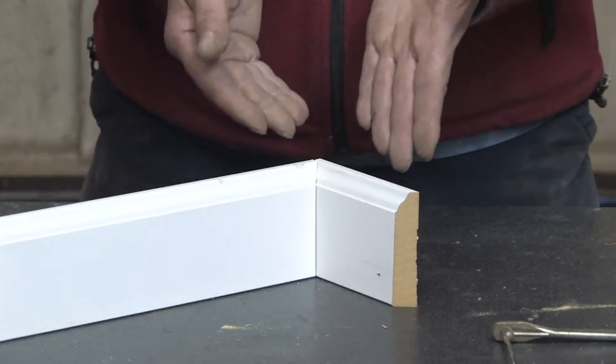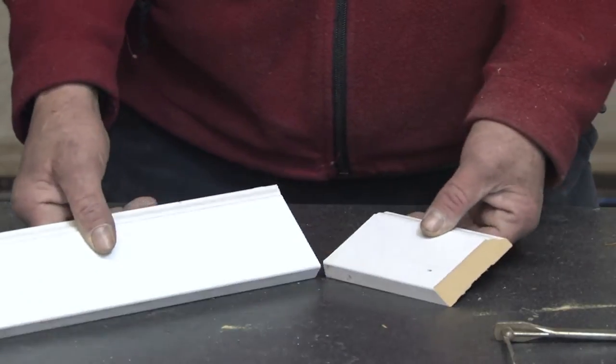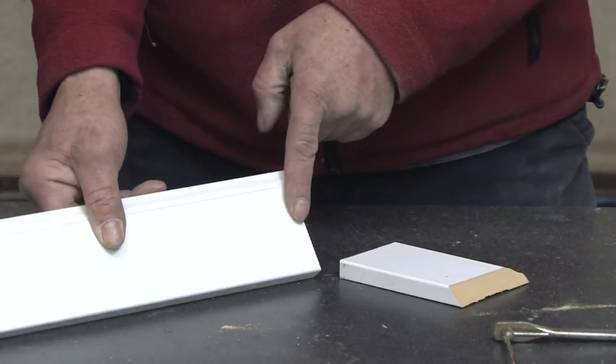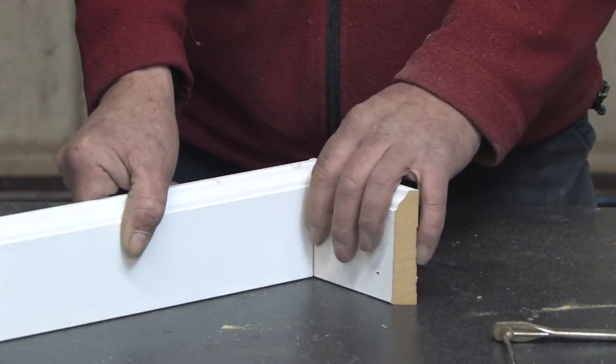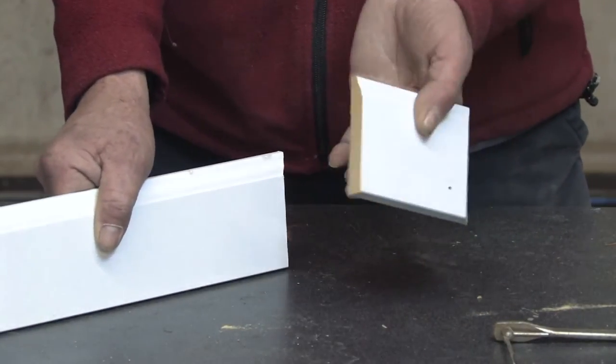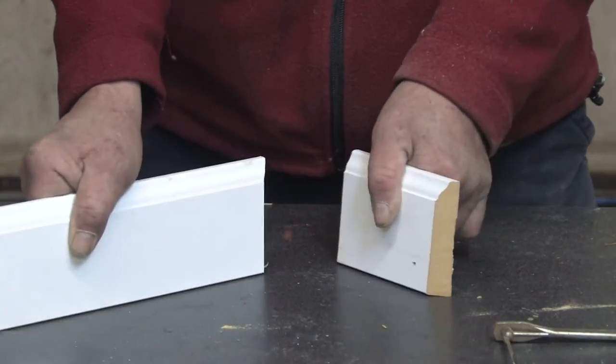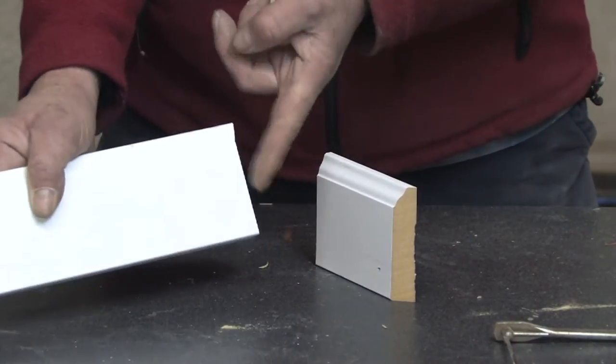Basically, you've got a corner joint. Instead of making two 45 inside cuts joined together to make a 90 degree angle on your inside corner, you have one piece that's just butt cut on a 90, and the other piece butts up against it using coping.